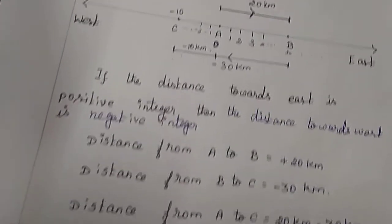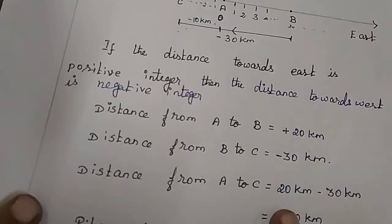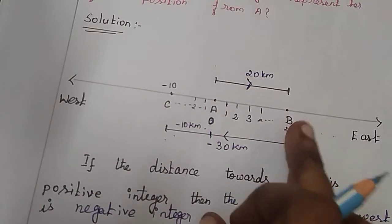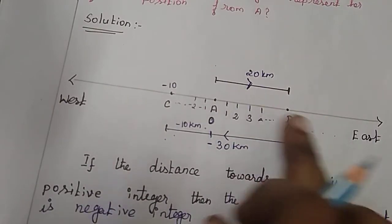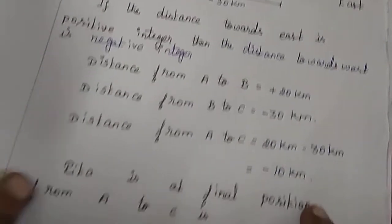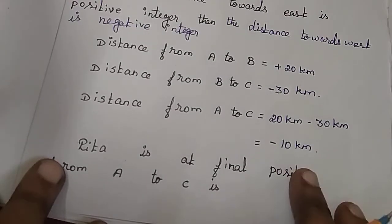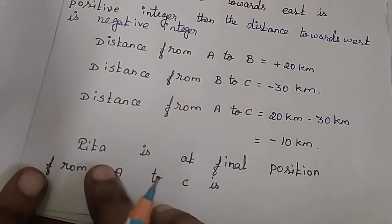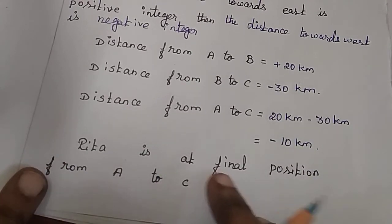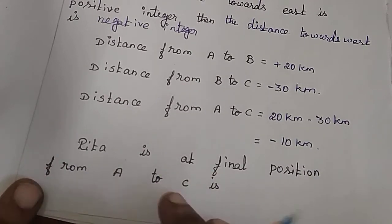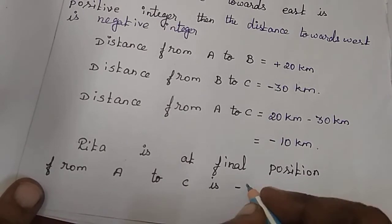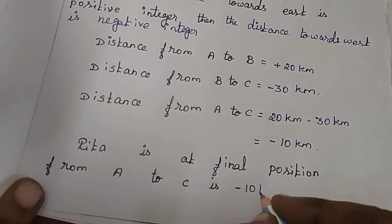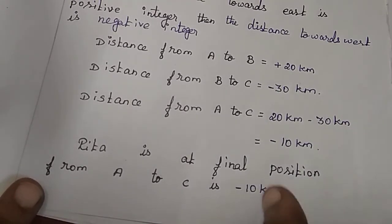So Rita's final position from A to C is minus 10 km. That's it. Thank you.